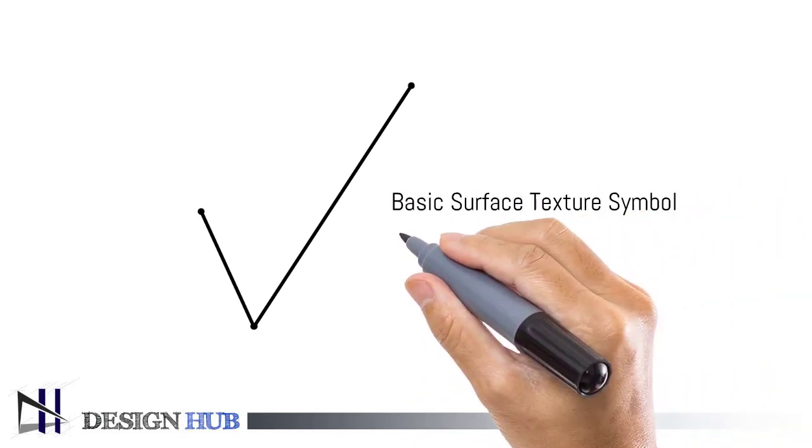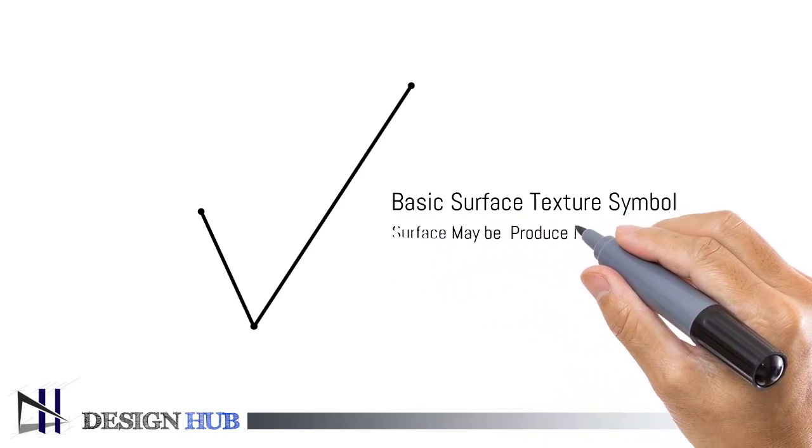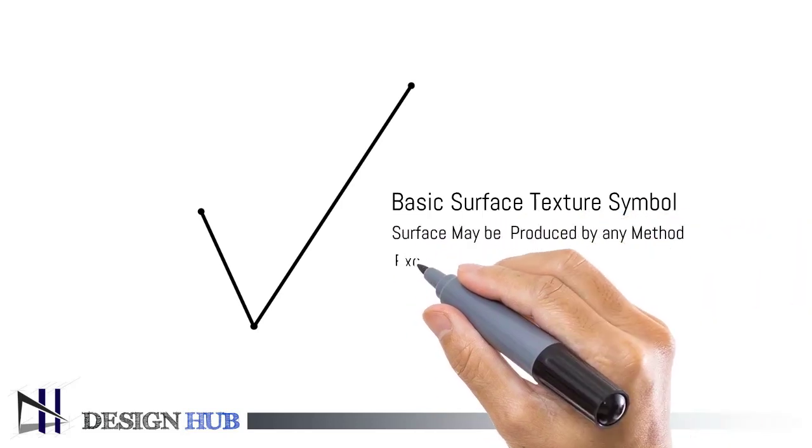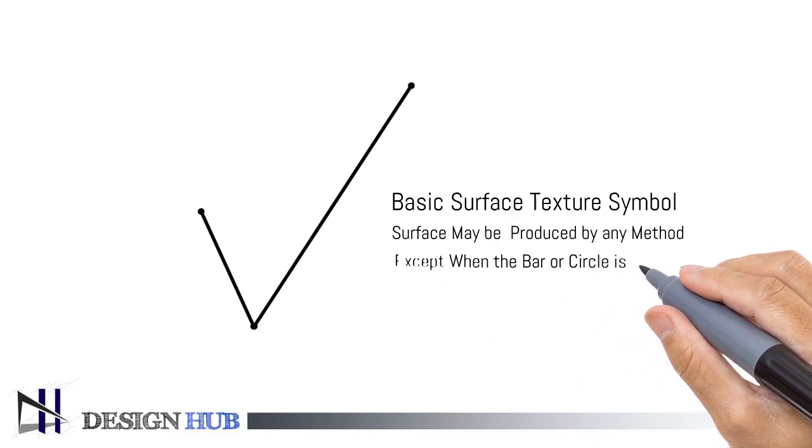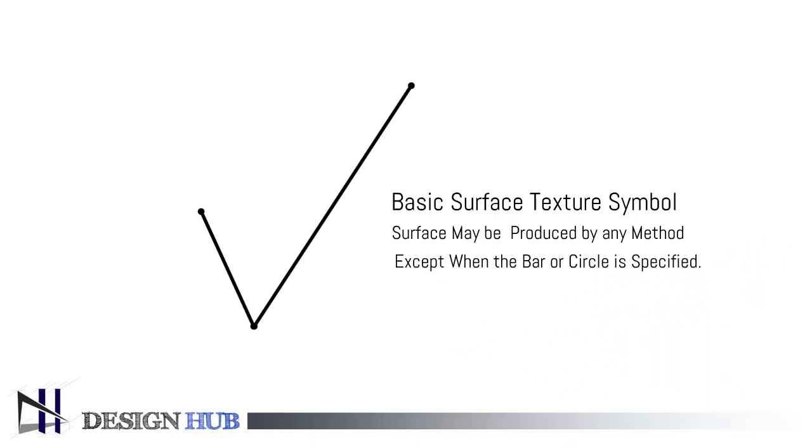This is the basic surface texture symbol. This symbol indicates that the surface may be produced by any method, except when the bar or circle is specified.